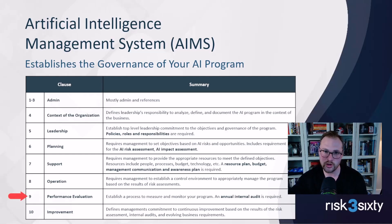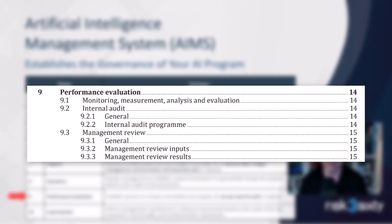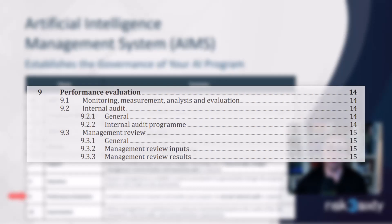Clause nine is performance evaluation. You've defined context, got leadership committed, identified risk, and applied resources — but how do you know if your management system is performing? Things change, new risks emerge, and controls need monitoring. Clause nine requires an independent internal audit — something Risk 360 often performs for clients — reporting results to management. Clause 9.3 then requires management to ingest those findings and decide what to do about them.